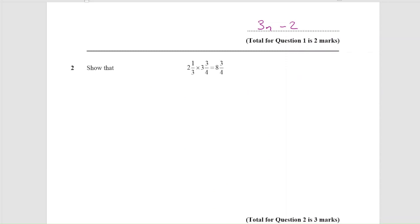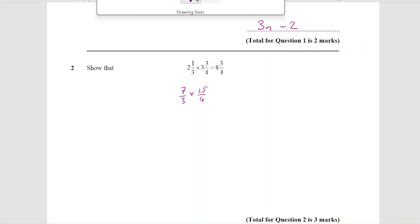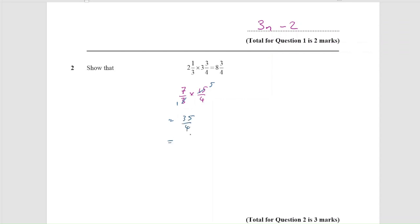Question 2. When we're multiplying mixed fractions, we need to convert them both to improper fractions. So my first step: 3 times 2 is 6 plus 1 is 7, giving 7 over 3. Multiplied by 3 times 4 is 12 plus 3 is 15, giving 15 over 4. I then always simplify before I multiply — cancel down by a factor of 3, giving 7 times 5 is 35 over 4. Then 4 goes into 35: 8 times 4 is 32, leaving 3 left over, which is what we're asked to show.